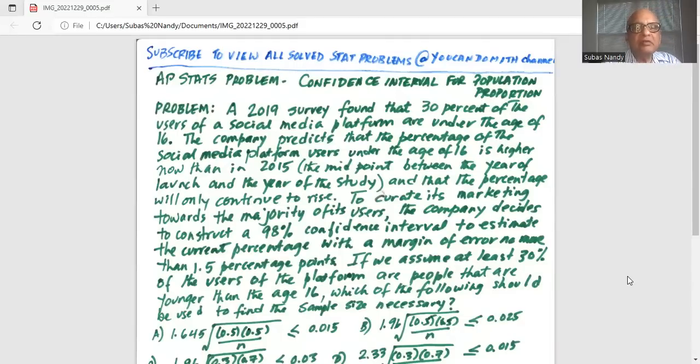A 2019 survey found that 30% of users of social media platforms are under the age of 16. The company predicts that the percentage of social media platform users under the age of 16 is higher now than in 2015, the midpoint between the year of launch and the year of study, and that the percentage will only continue to rise.